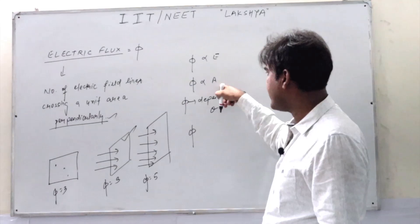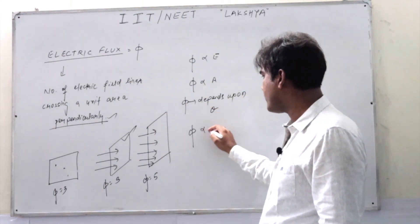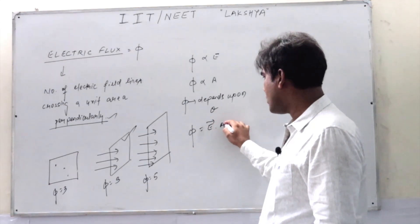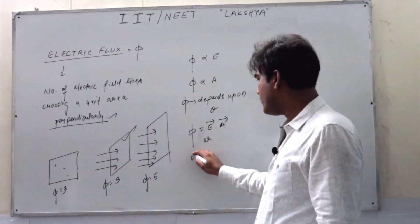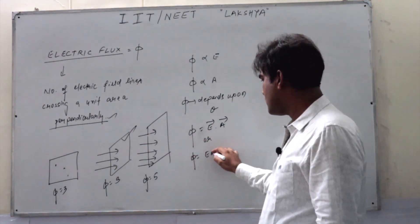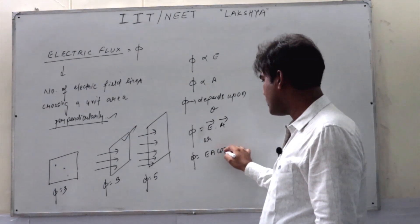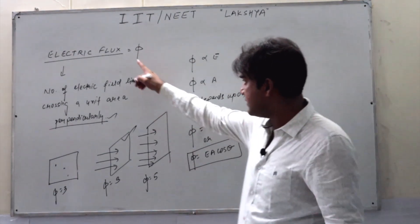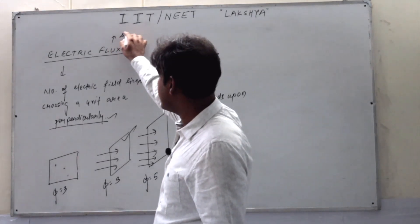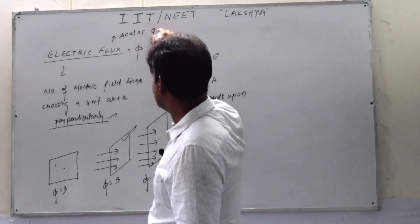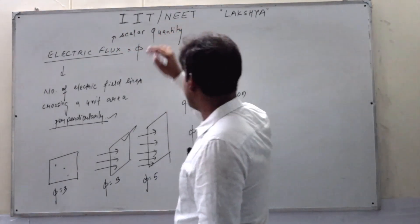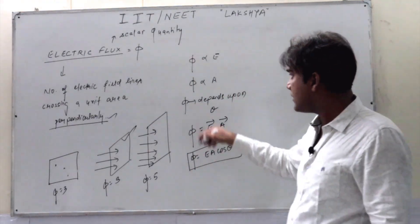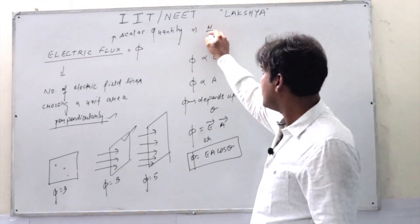Combining all these concepts — phi depends upon E, depends upon A, and depends upon theta — I am writing: phi equals E dot A, or phi equals E·A·cosθ. And that is the reason I say that electric flux is a scalar quantity. What will be its unit? Newtons per coulomb — which is force per unit charge — into area, which is metre squared. That is the unit of electric flux.